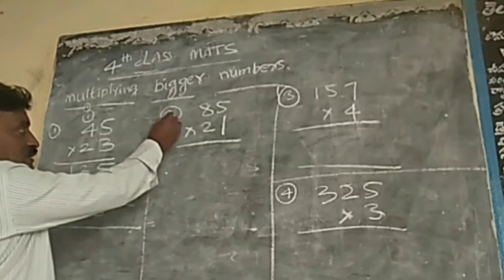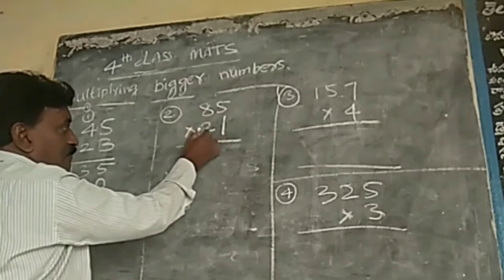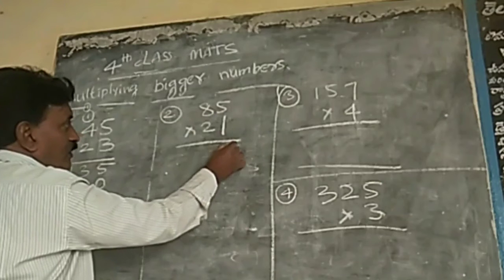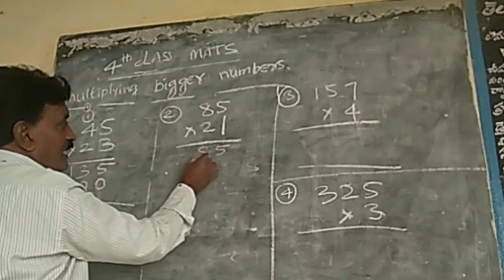Next, second one. 85 multiplied by 21. First you take this one. 1, 5, yeah. 5. 1, 8, yeah. 8.